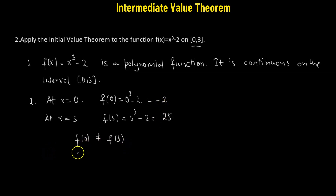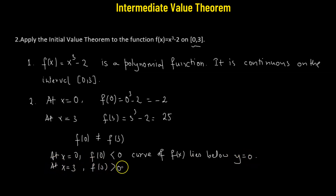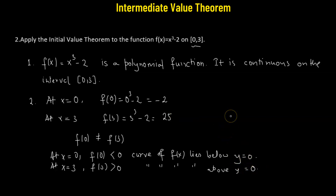We can say that at x equals to 0, our function is less than 0 — that means it's a negative value — so the curve of f of x lies below y equals to 0. And for x equals to 3, since f of 3 is greater than 0, the curve of f of x lies above y equals to 0. So that means the curve must pass through the line y equals to 0. And if it's passing through the line y equals to 0, that means the straight line y equals to 0 intersects the graph.